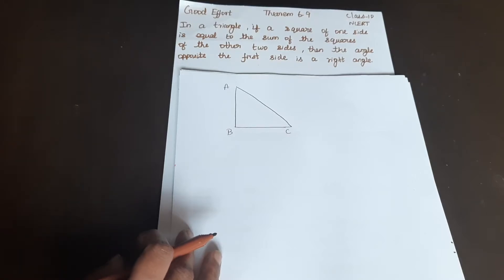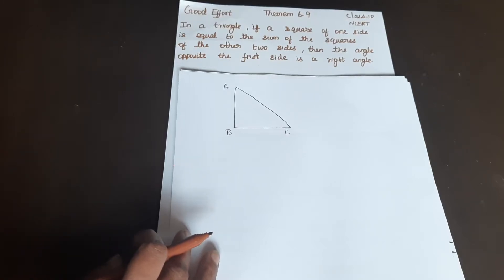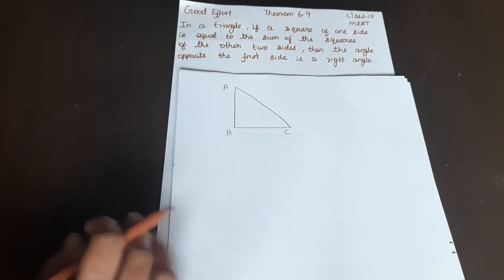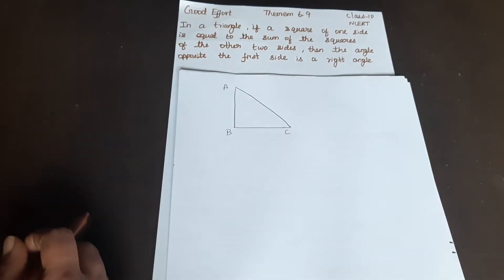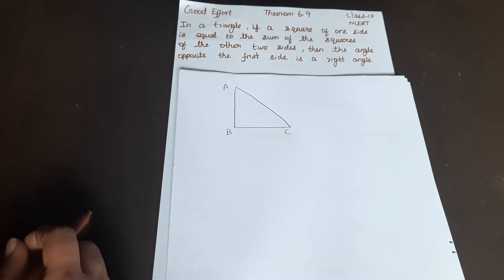Welcome to Goodafford Channel. Good morning students. In a triangle, if the square of one side is equal to the sum of the squares of the other two sides, then the angle opposite the first side is a right angle.